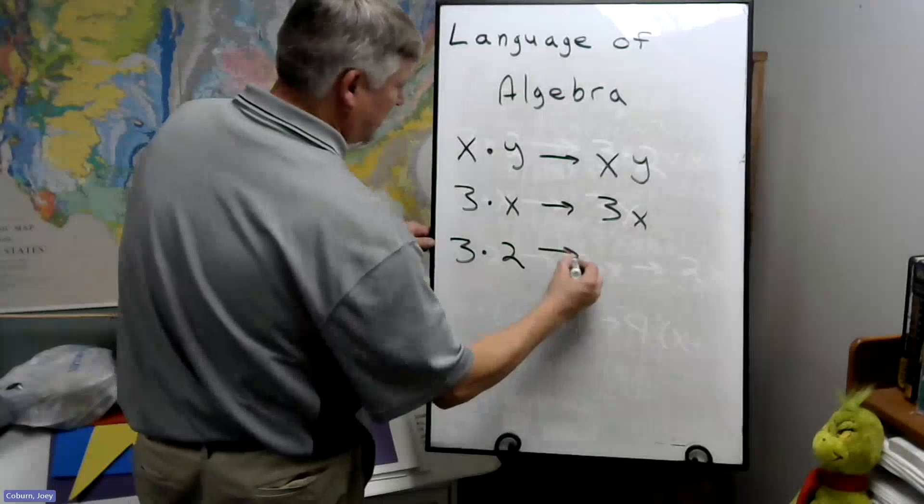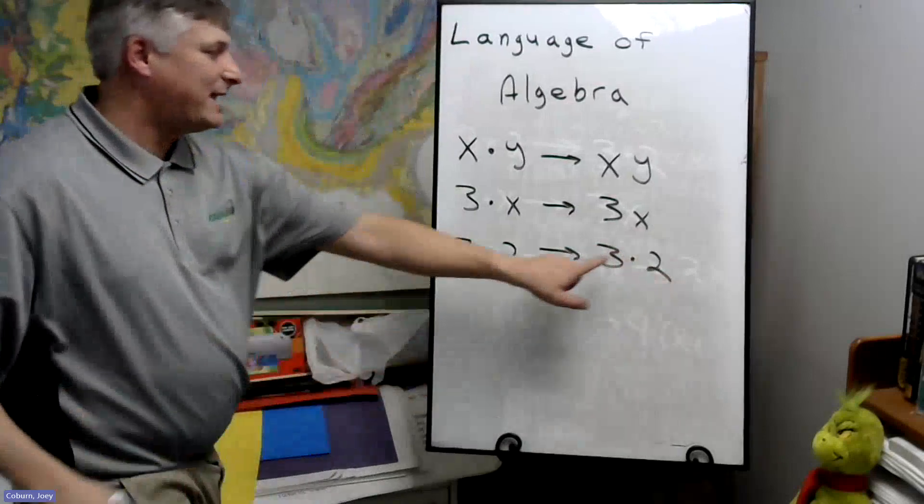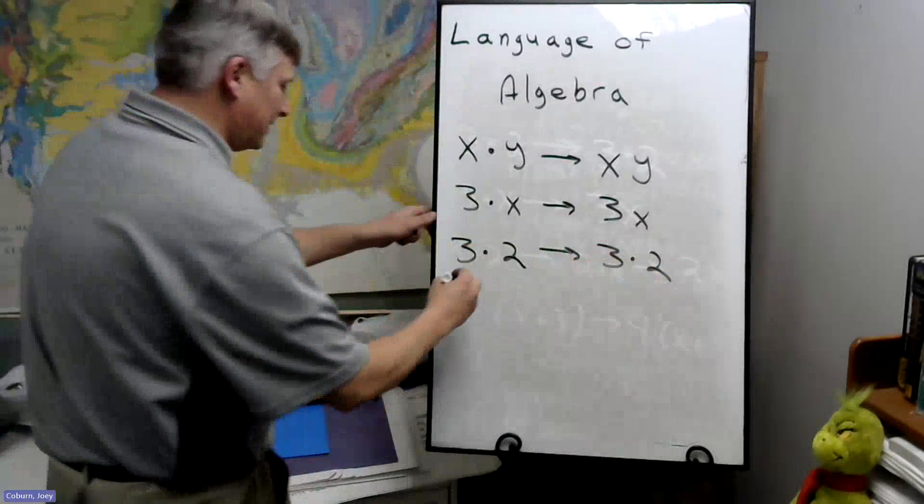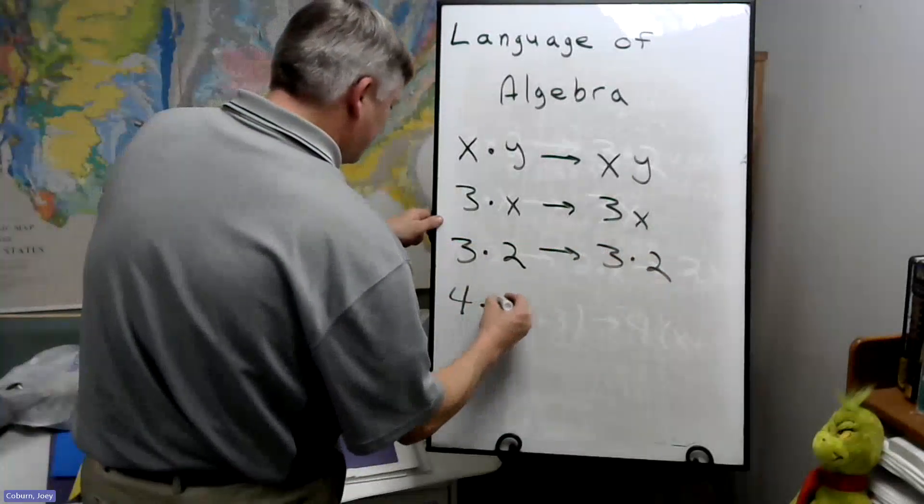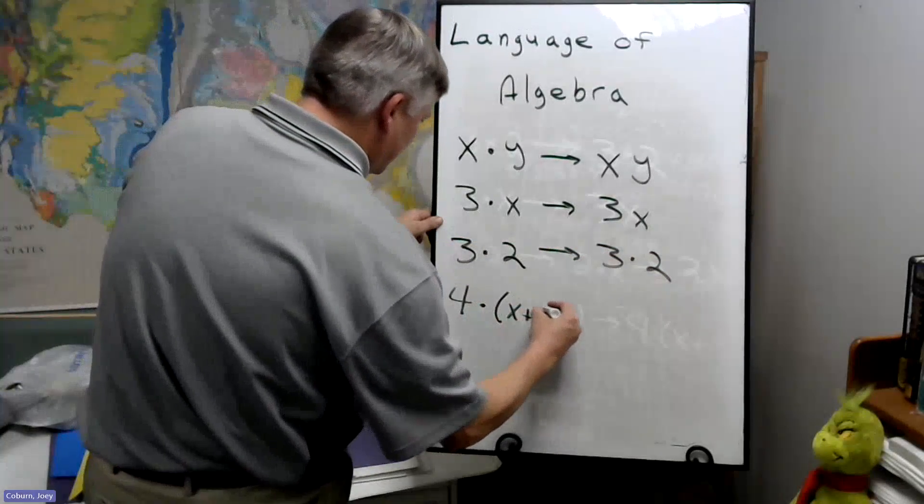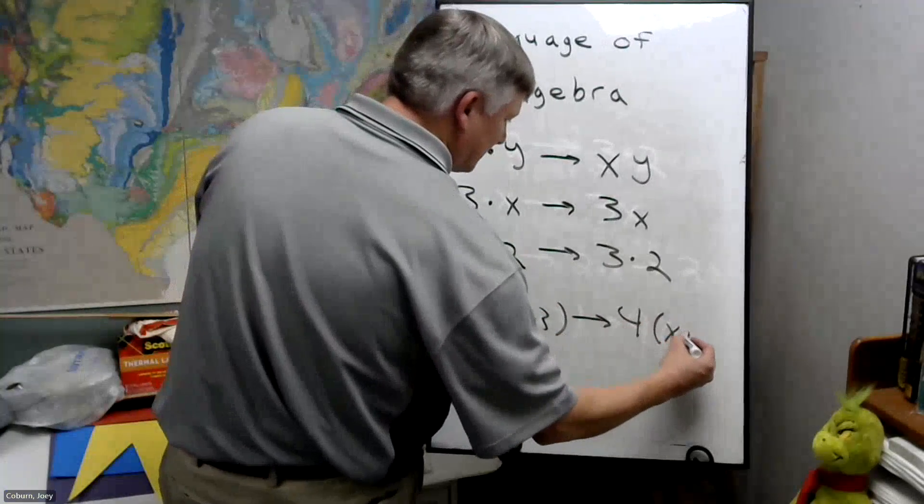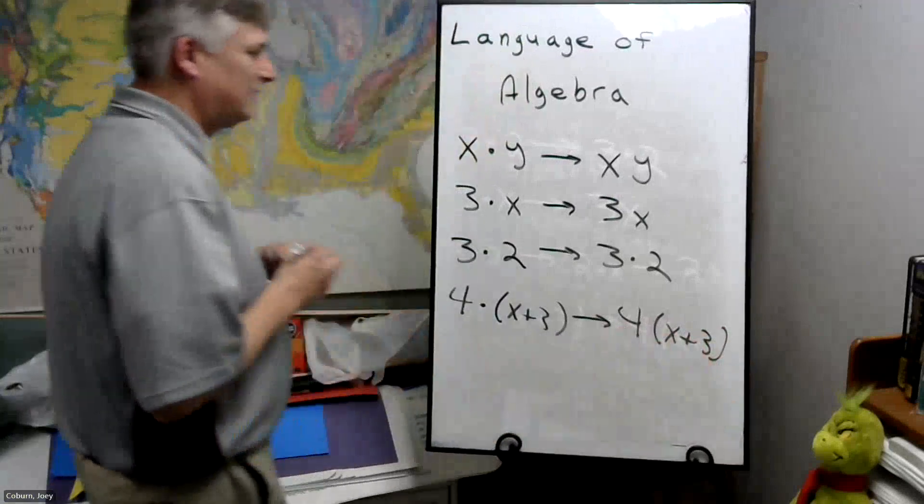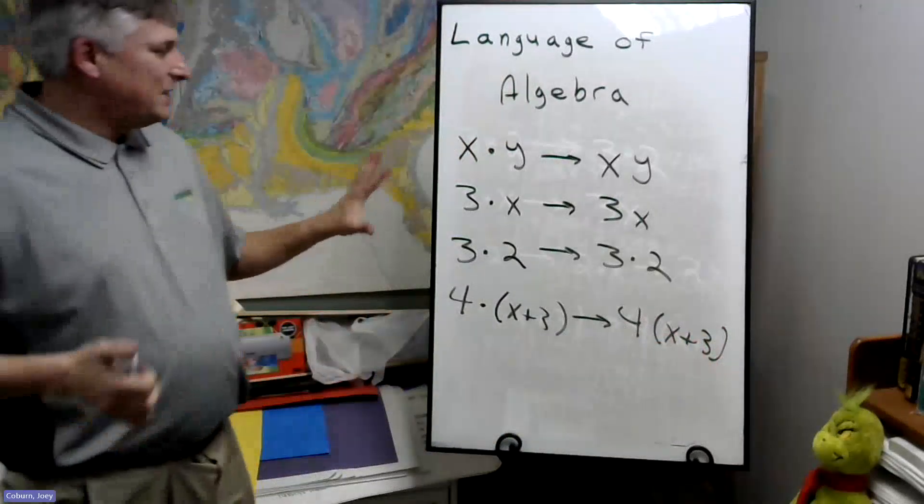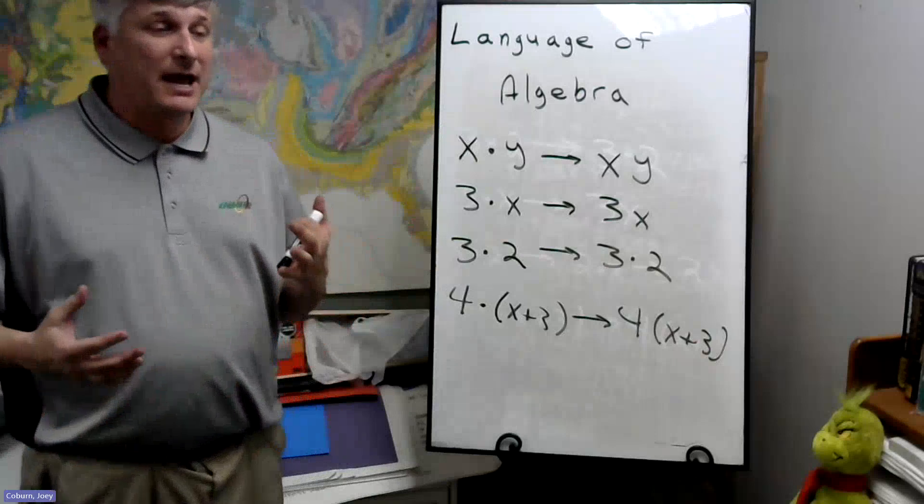In general for multiplication, this one won't change. 3 times 2 keeps the dot visible. And then 4 dot (X plus 3), this one again you can write it with an invisible dot. So multiplication things change a bit in algebra.